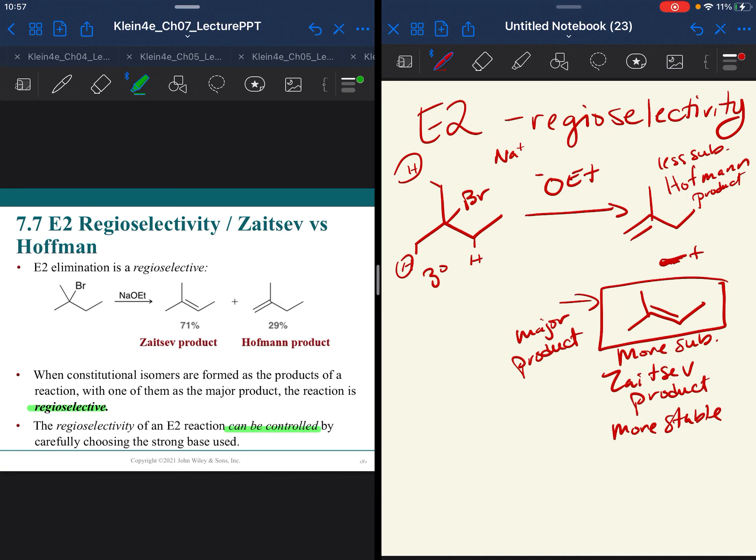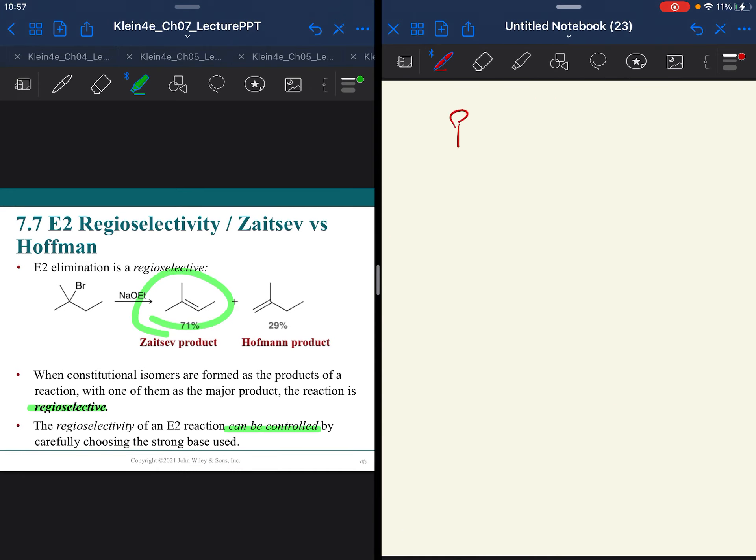Now, it can be controlled because what you're going to learn is the organic chemist is a control freak. Great, I can make the Zaitsev product in a greater amount, but what if I want the Hofmann product? I can do that too. I just have to be very thoughtful about my choice of base.